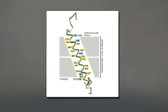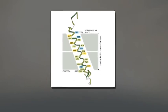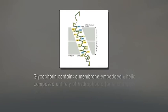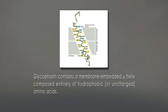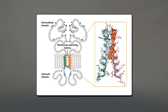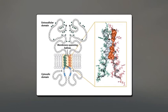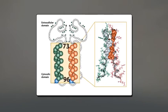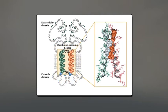Glycophorin, a major erythrocyte membrane protein, exhibits both types of interaction. As shown in the figure, glycophorin contains a membrane-embedded alpha helix composed entirely of hydrophobic or uncharged amino acids. Although glycophorin, as a monomer, has a single membrane-embedded alpha helix spanning the bilayer, this protein is present in erythrocyte membranes as a dimer of two identical polypeptide chains. The two membrane-spanning alpha helices of glycophorin are thought to form a coiled-coil structure stabilized by specific interactions between the amino acid side chains at the interface of the two helices.